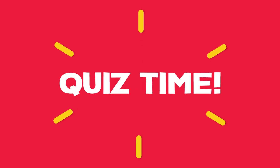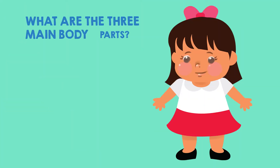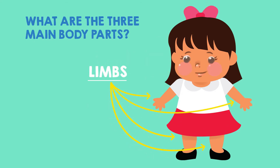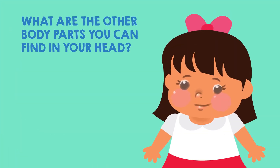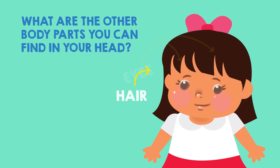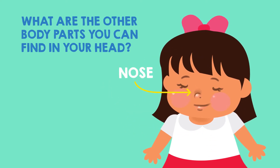It's quiz time! What are the three main body parts? The head, the trunk, and limbs. What are the other body parts you can find in your head? You can find the hair, eyes, ears, nose, and mouth.